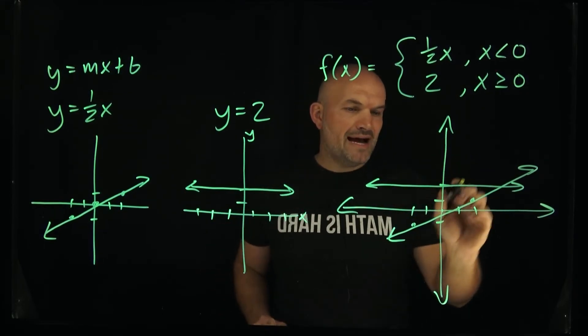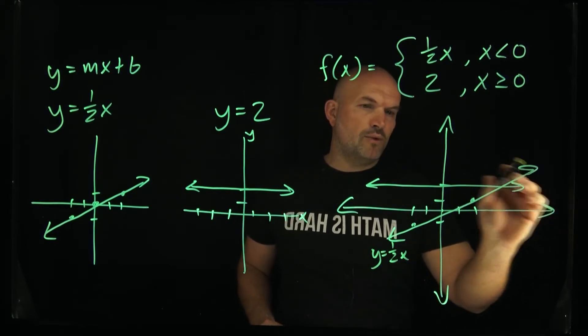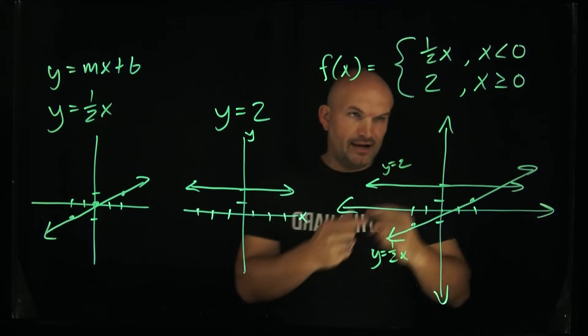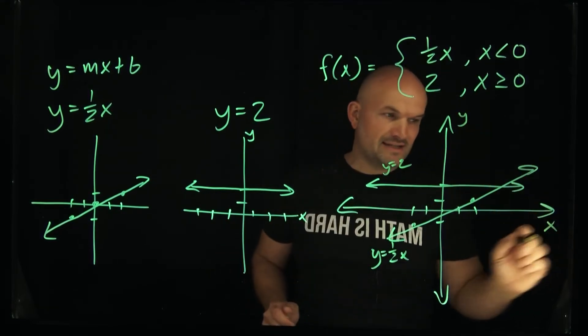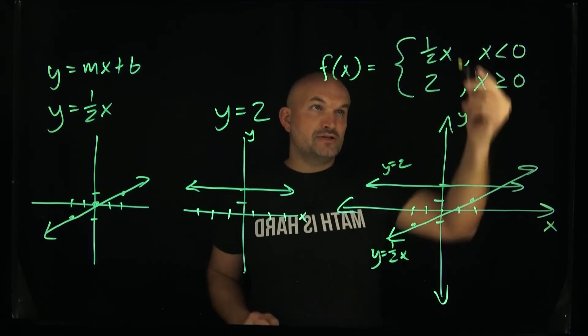Alright so now what we need to do is look at each of these rules separately to understand exactly how you're going to constrain them. Now we have this y=1/2x, that's that function, and then over here this is going to be y=2. Okay so now we have our y-axis and our x-axis. Now we need to understand when is each function going to be true.